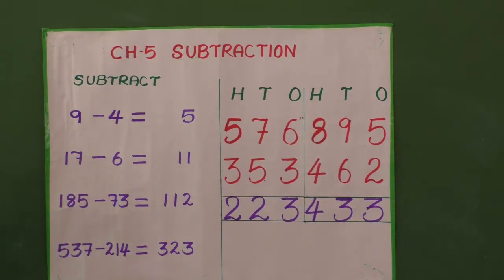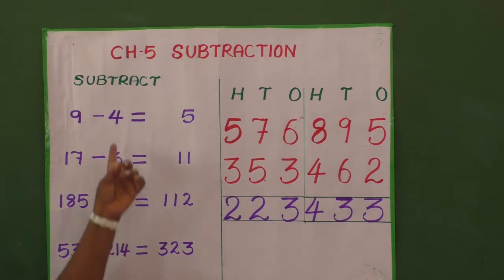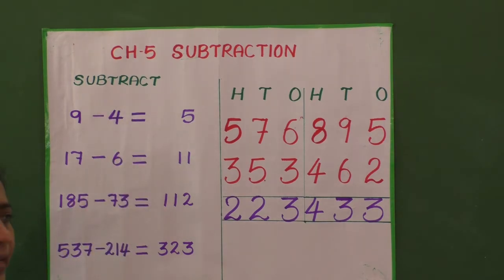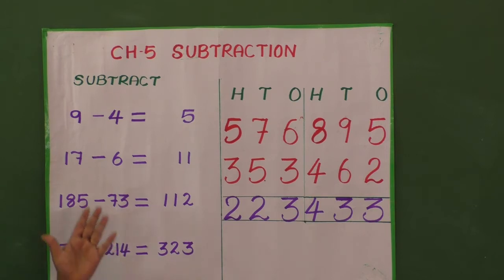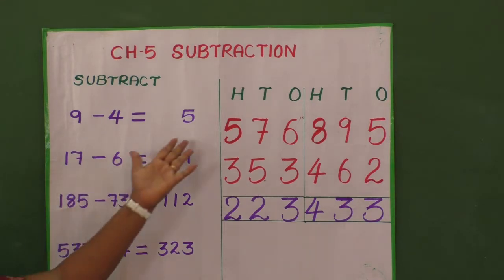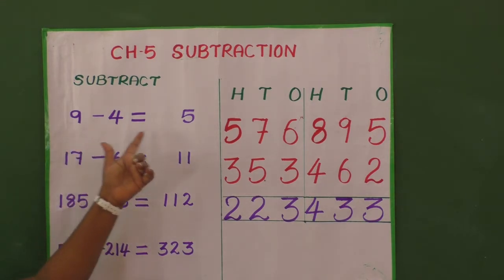The first one — they gave a single digit number only: 9 minus 4. Usually, how will you do the subtraction? You will keep the second number in your mind, then close your fingers and leave the finger up to the first number. Here the second number is 4, so 4 in the mind, close your fingers: 4 after — 5, 6, 7, 8, 9. The first number is 9, so stop up to 9. How many fingers? 1, 2, 3, 4, 5. The answer is 5. So 9 minus 4 equals 5.